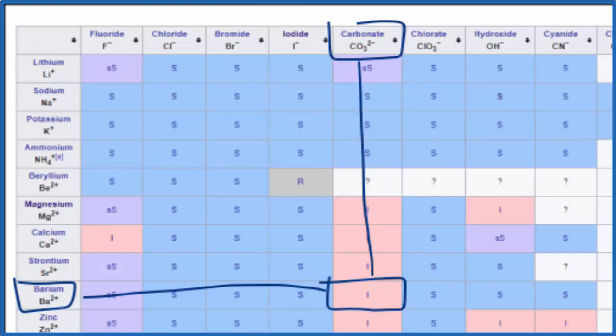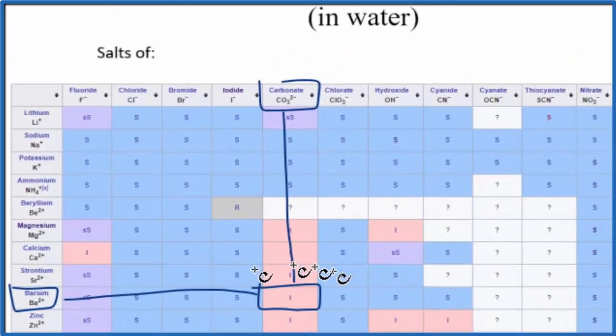When you put barium carbonate in water, it won't dissolve. It'll just fall to the bottom. It won't dissociate into its ions. We should note that when we say that it's insoluble, a little bit of it will dissolve, but a very, very small amount. So we just say that it doesn't dissolve, it's insoluble.